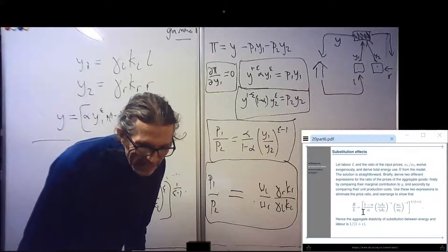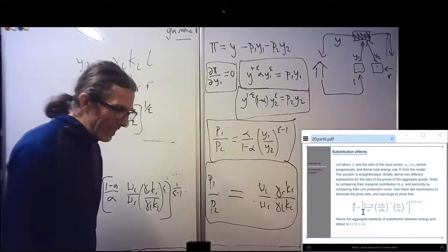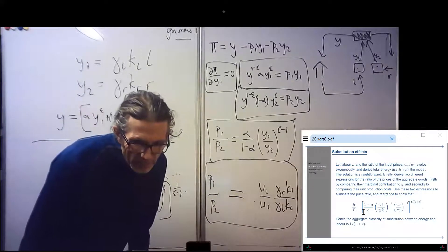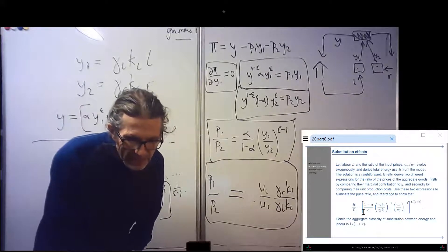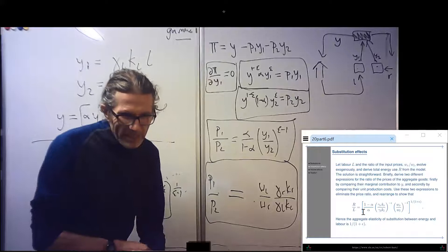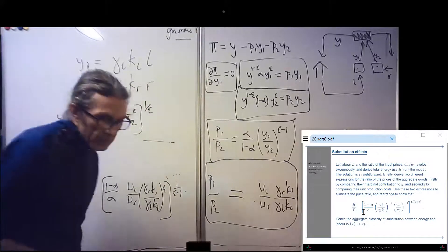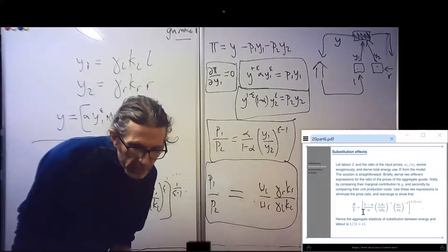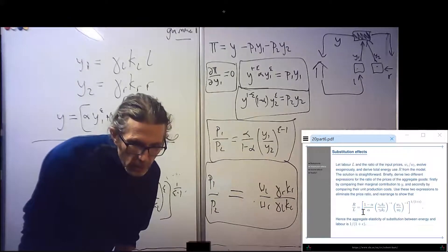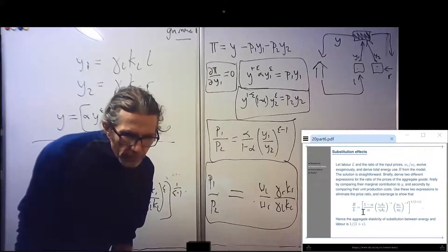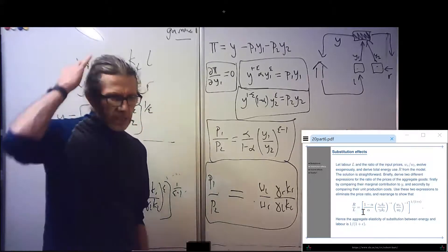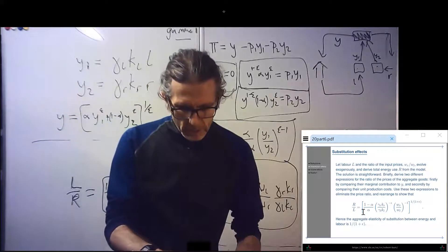And we end up with L over R. And we can turn it into the aggregate. Big L over big R is one minus alpha over alpha times WL over WR times gamma R KR over gamma L KL to the epsilon, all to the one over epsilon minus one. Maybe I'm being a bit bold by rubbing this out. I haven't even checked whether it's right yet. One minus alpha over alpha gamma R KR over gamma L KL to the minus epsilon. Is this right? So it's the other way around, but then my alpha and one minus alpha are wrong. Let me pause this and try and work out what's happened.